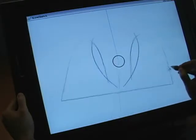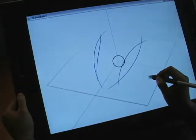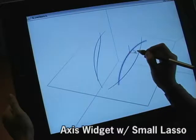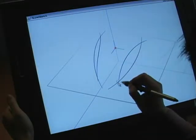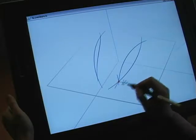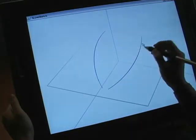The small lasso gesture activates an axis widget on either a 3D curve, an axis, or curve intersection points. The scratch out gesture deactivates the axis widget.